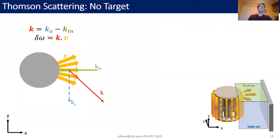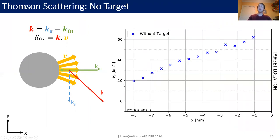We can also carry out Thomson scattering in these experiments. I'll start by showing the case where there is no target, so the flows coming out from the exploding wire array just propagate undisturbed into a vacuum. We pass our probing laser beam down through the center of one of these flows and collect the scattered light at 90 degrees using a linear fiber optic bundle, collecting light from 14 distinct spatial locations. Because we're collecting at 90 degrees, the resultant Doppler shifts are due to velocities along the k vector, so we multiply by square root 2 to get the velocity along the flow. We can see that the flow gradually accelerates away from the wire array, due to the J cross B force from the magnetic fields dragged within the flows.